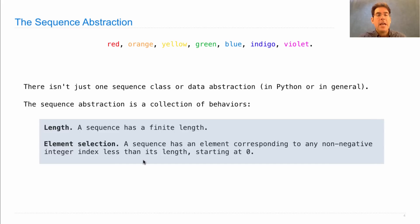And having the ability to select a particular element by its index. So a sequence has an element corresponding to any non-negative integer index less than its length, starting at zero. There are the indices for this sequence.